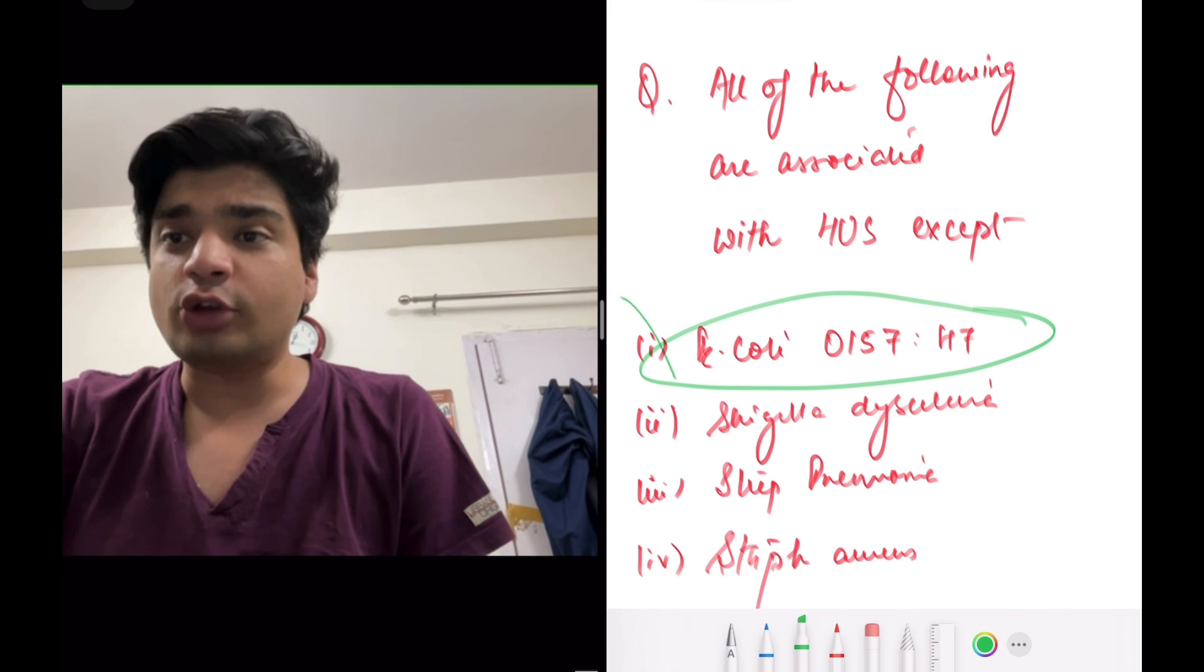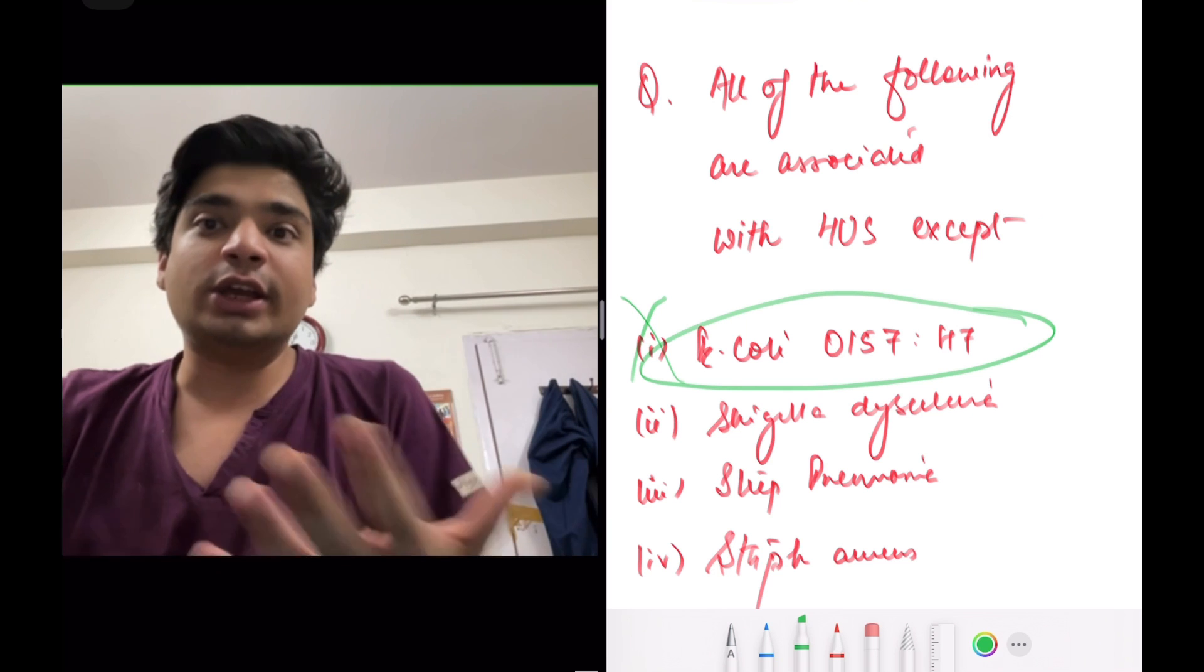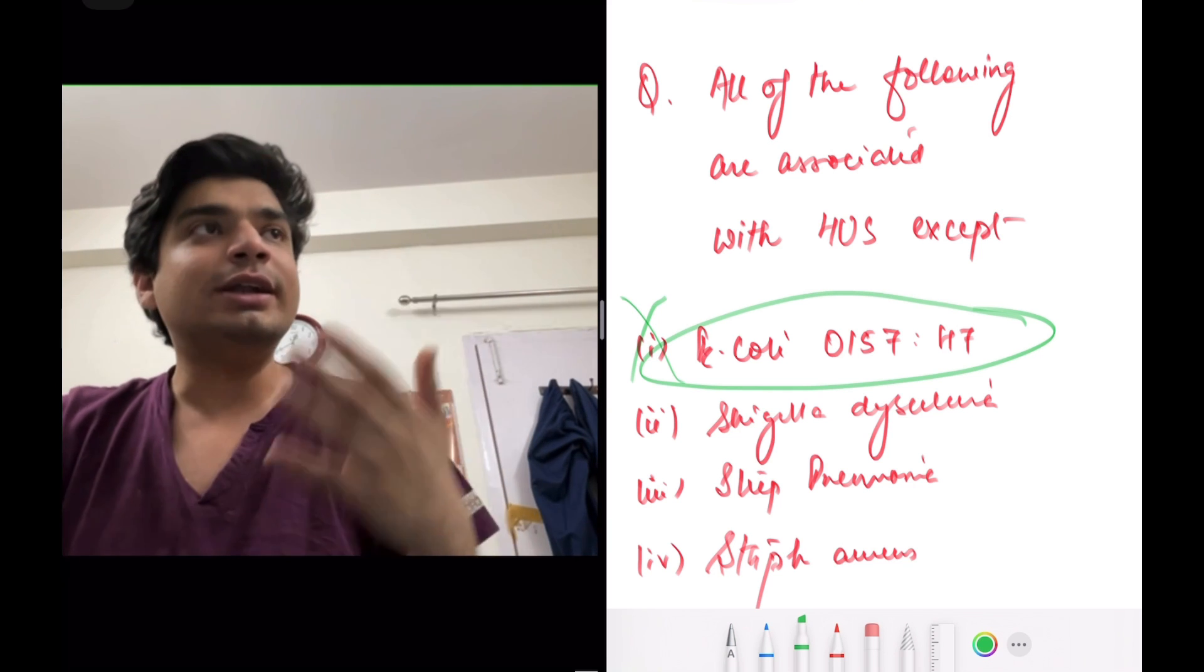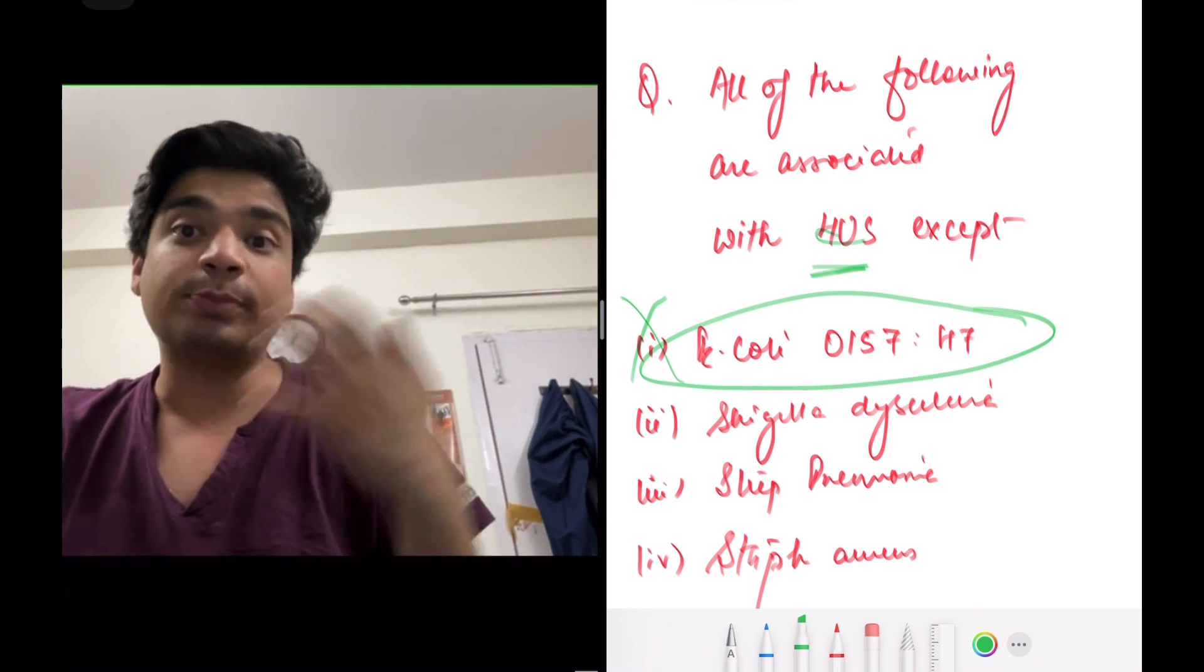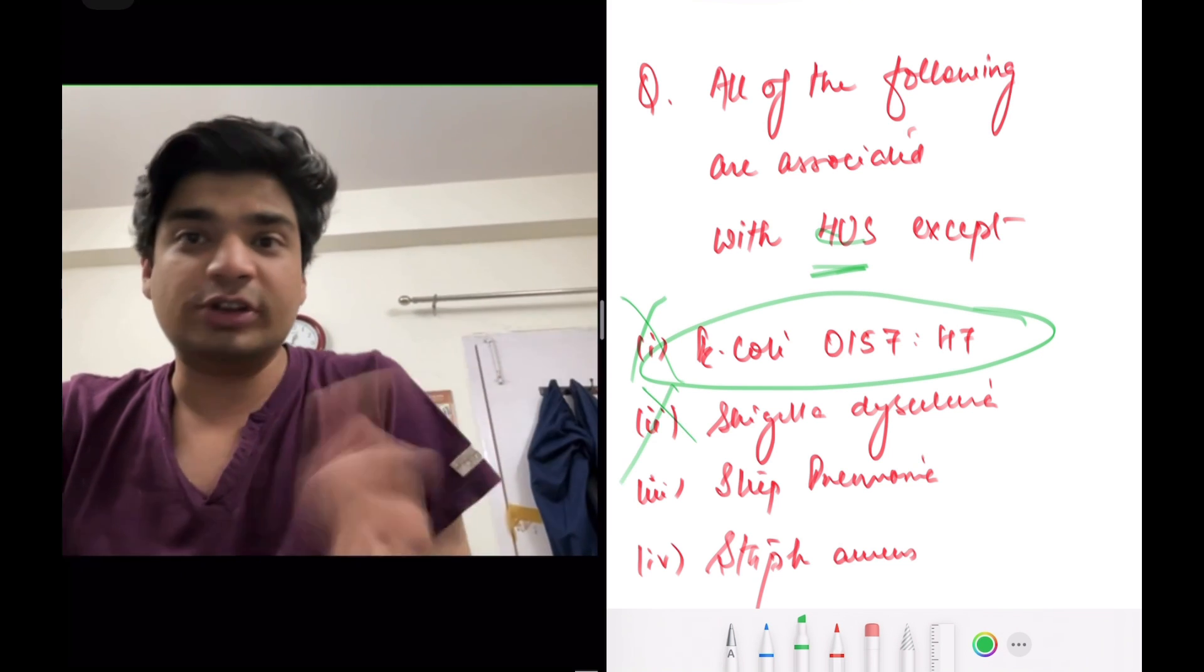So you will eliminate this option and see what are the next three options you might get confused. So I thought, I will think of it in this way that okay, we know that typical HUS is caused because post dysentery. So obviously, Shigella dysentery can probably cause it. So this should be eliminated.